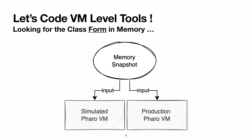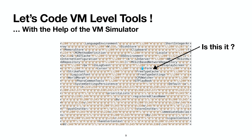So let's code at the VM level then. The first thing we need to do is find the class Form in memory, find the corresponding method that is triggering the breakpoint, and remove it. In Pharo, we use memory snapshots to manage the environment, which can be loaded either into the production Pharo VM used by every Pharo developer every day, or into a simulated Pharo VM which has nicer properties for working on the VM — this is what Pharo VM developers use. This is a screenshot of part of the Pharo image, a memory dump. I found this string Form there — but this is not the class Form, just a string representing the name. It's binary, and we cannot read that binary without knowing how it was encoded first. That's why we need the VM simulator; otherwise it would probably take months of work.